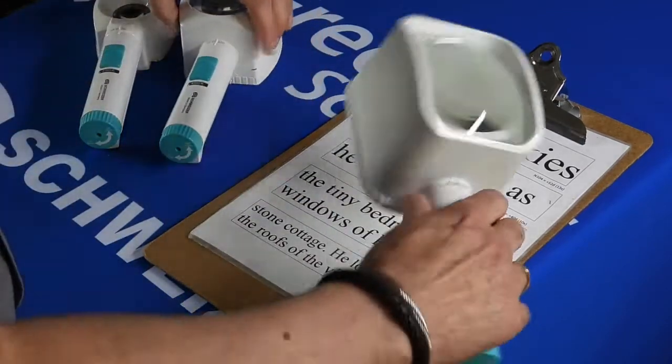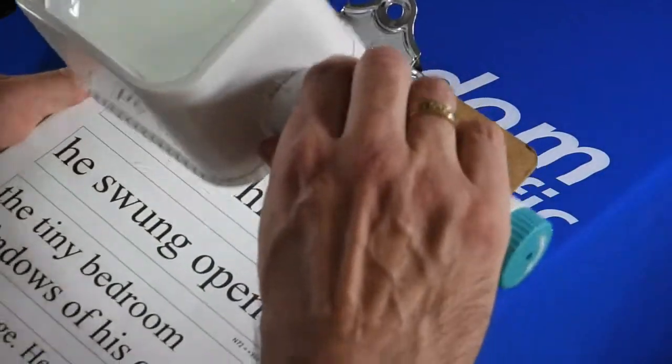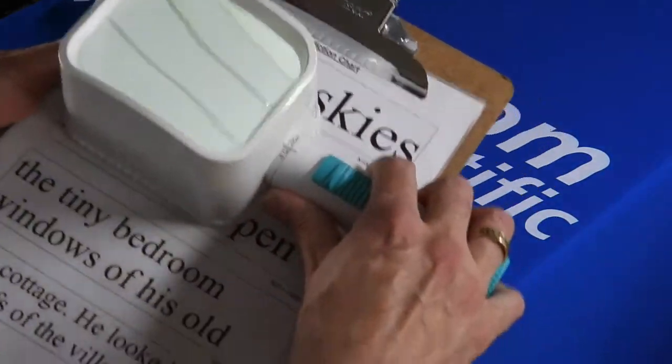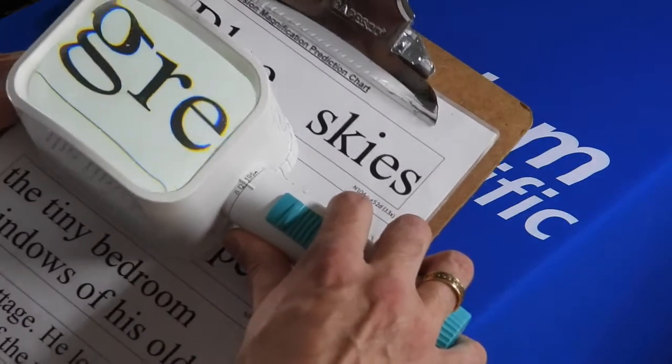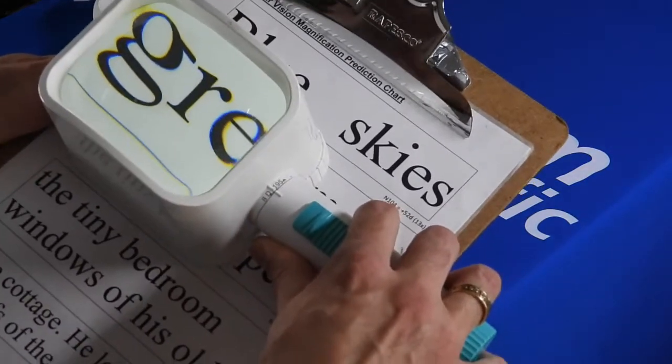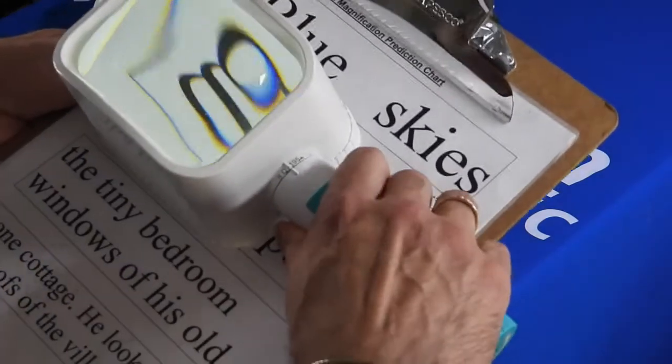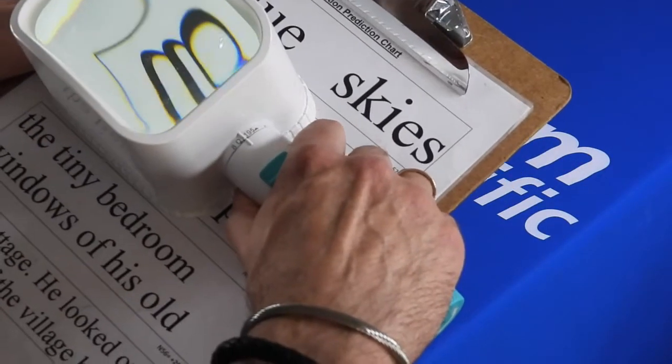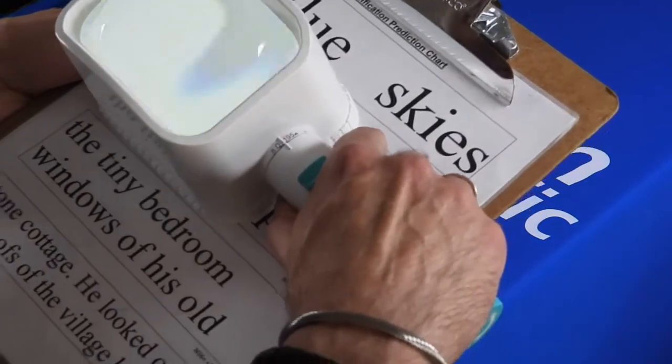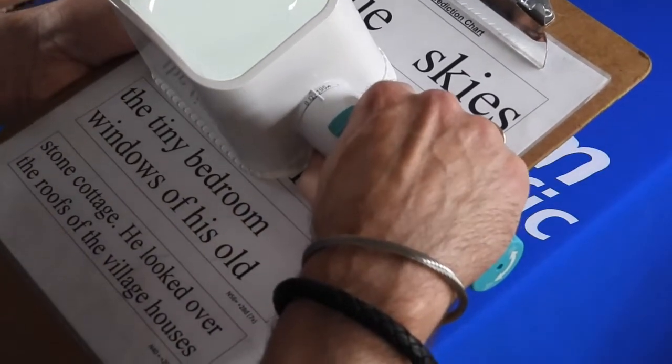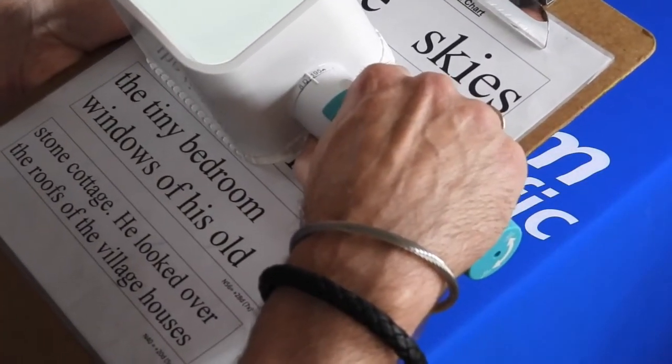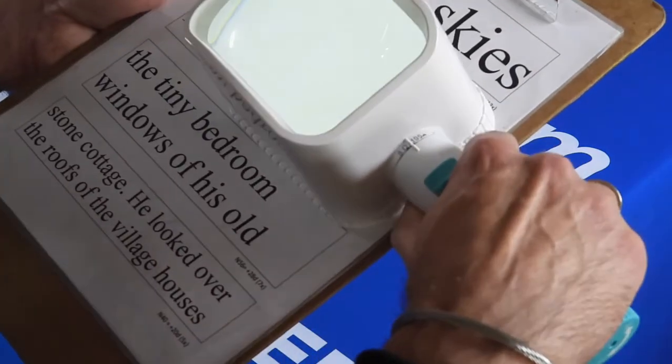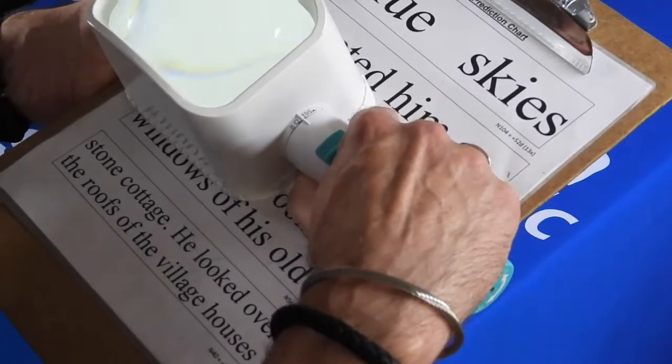With the stand magnifier, one of the benefits is that once you place it on the reading material, it is already at the correct focal distance, so you don't have to worry about getting this at the right height. The only thing you need to do is to move your head and your vision closer to the lens to be able to read it.